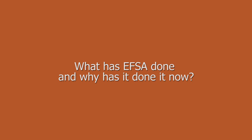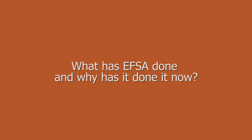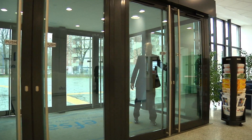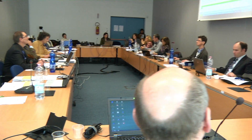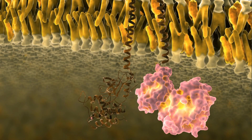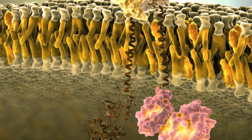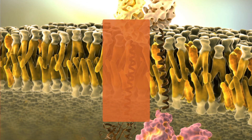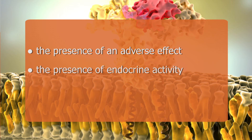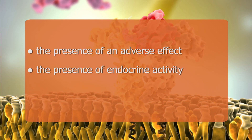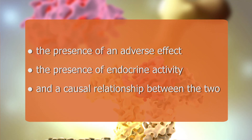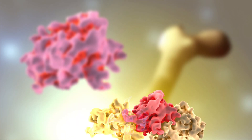EFSA's opinion establishes scientific criteria for identifying the hazards of endocrine active substances and assesses current testing methods for this purpose. We endorse the World Health Organisation definition that an endocrine disruptor is defined by three criteria: the presence of an adverse effect, the presence of endocrine activity, and a causal relationship between the two — in other words, that the endocrine activity leads to an adverse effect.